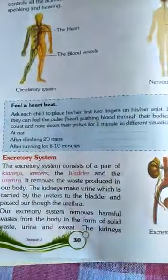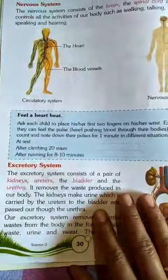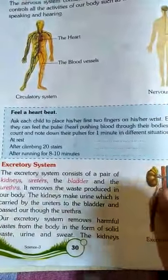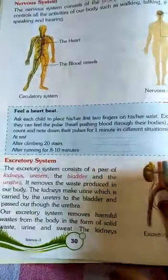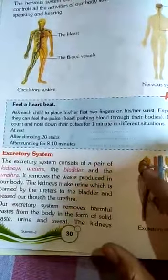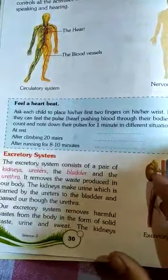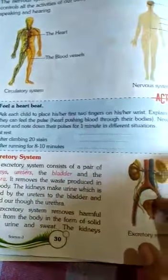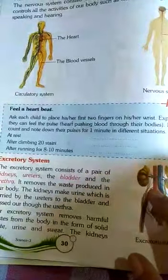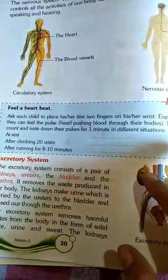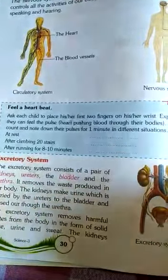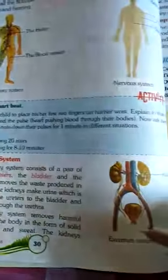The excretory system consists of a pair of kidneys, ureters, the bladder, and the urethra. The kidneys are bean-shaped and they produce urine. The ureters are ducts, narrow pipes, which carry urine from the kidneys to the urinary bladder.